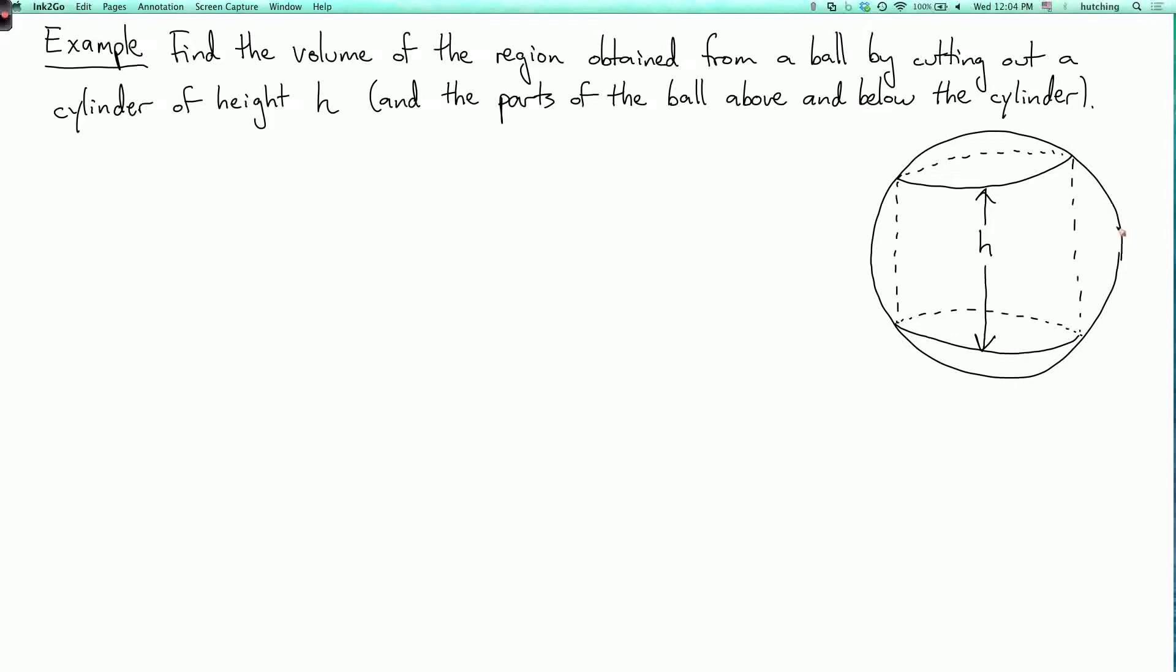So here's a picture of the region. Here's the cylinder, it has height h, and we want the part of the ball that's outside the cylinder. So imagine we take a solid ball and we take a drill and drill right through it, starting at the top and going down to the bottom, and we drill out this whole part. We just want the outer part, which looks sort of like a ring you might wear on your finger, and I want to find the volume of that region.